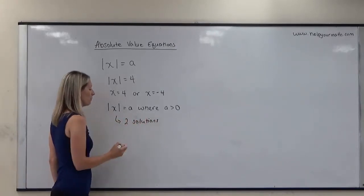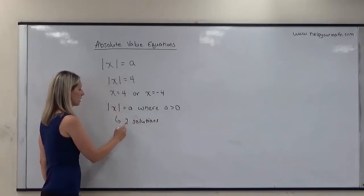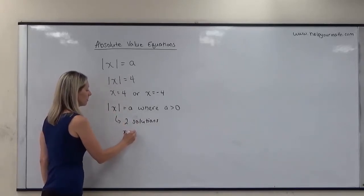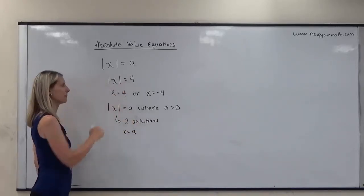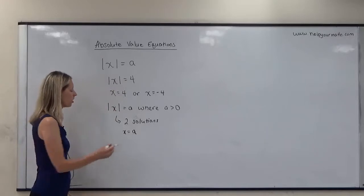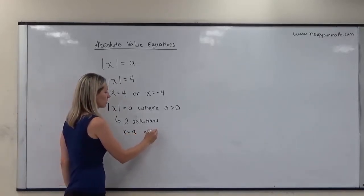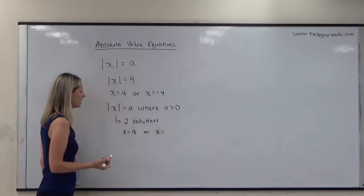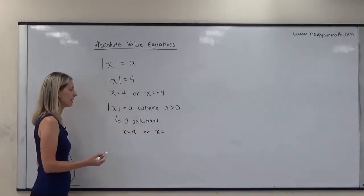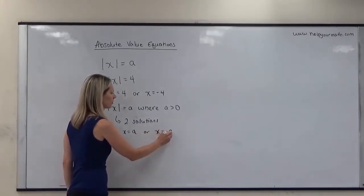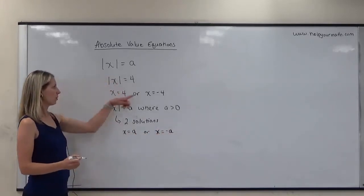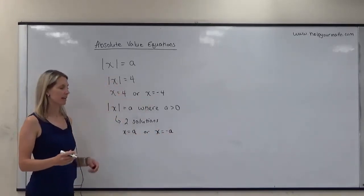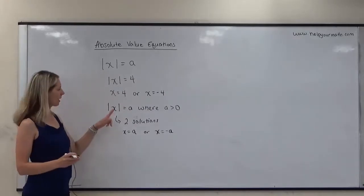The two solutions are found by setting what is inside the absolute value bars equal to the number itself, or equal to the negative of that number, negative a — which in this case would be negative 4.